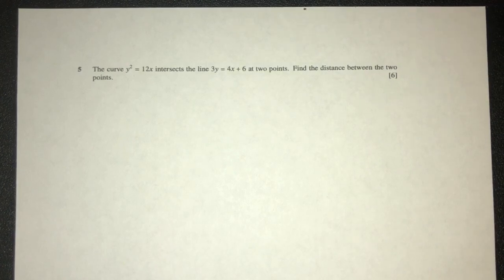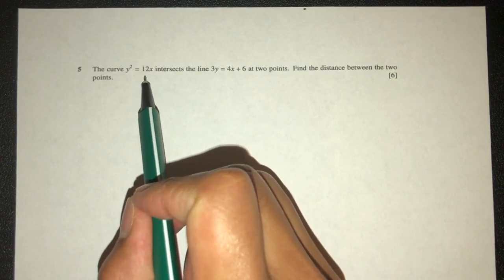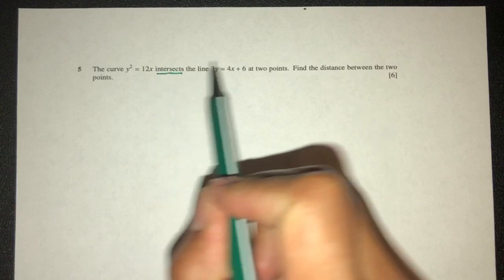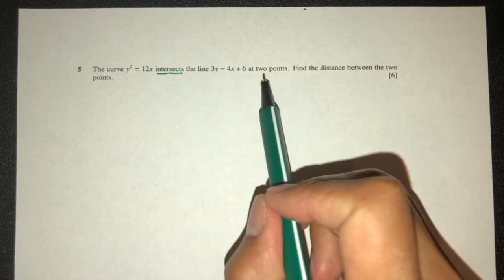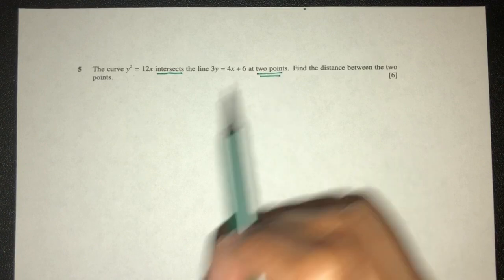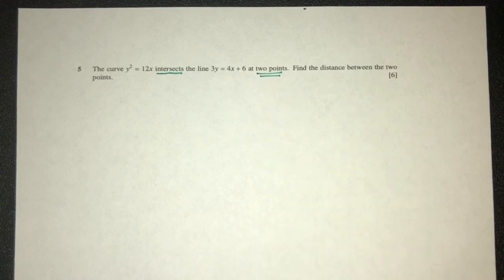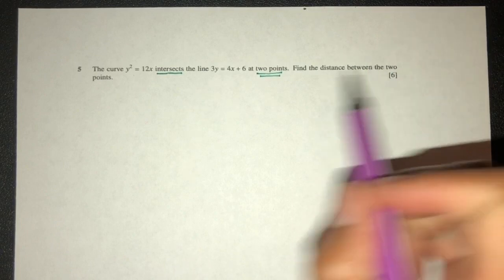So let's move on to the next question. The curve y squared equal to 12x intersects the line 3y plus equal to 4x plus 6 at two points. So it means that we will have two points of intersection obviously. Now we have to find the distance between those two points.